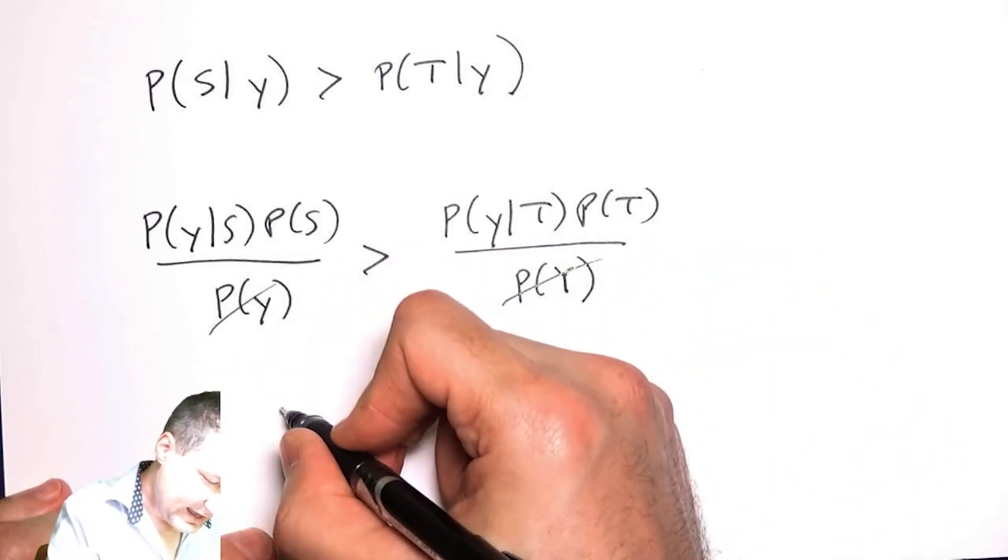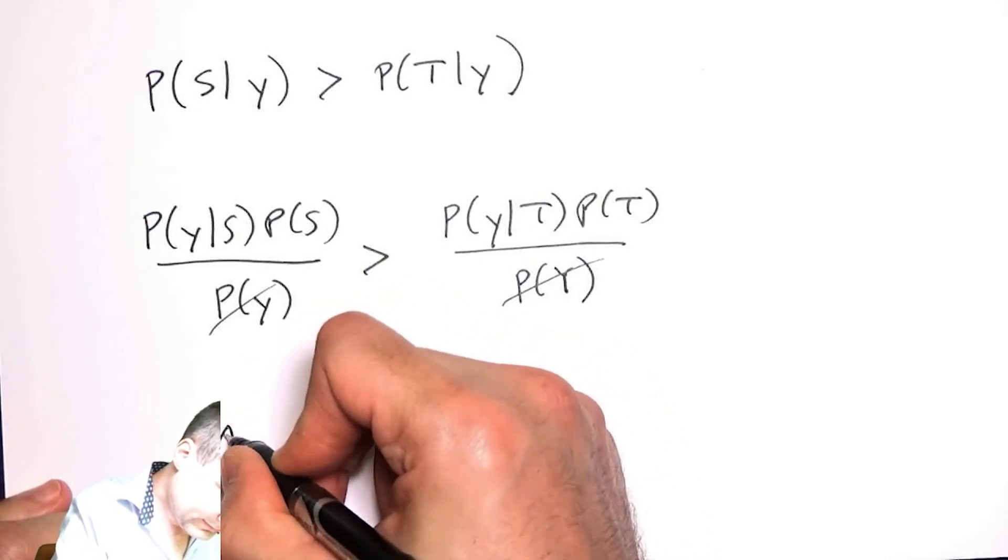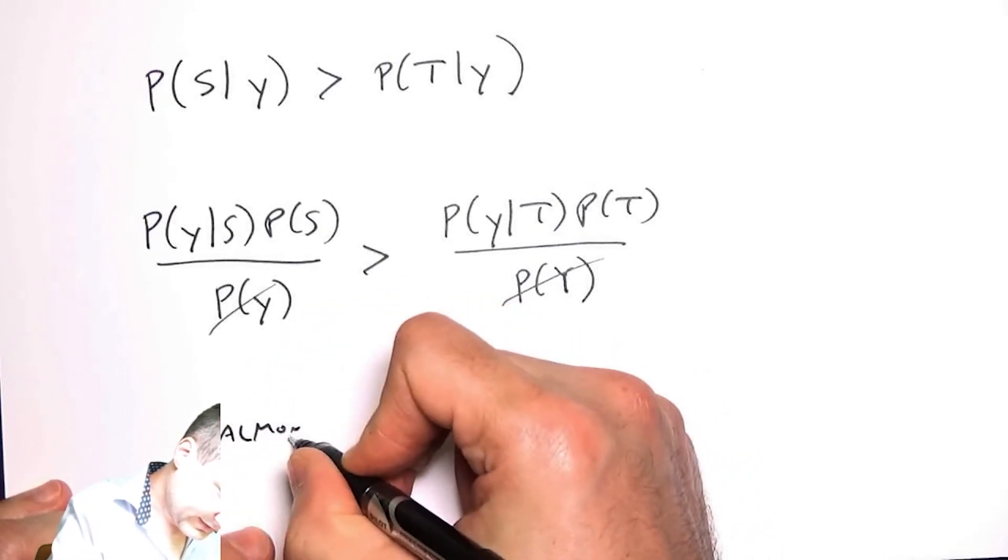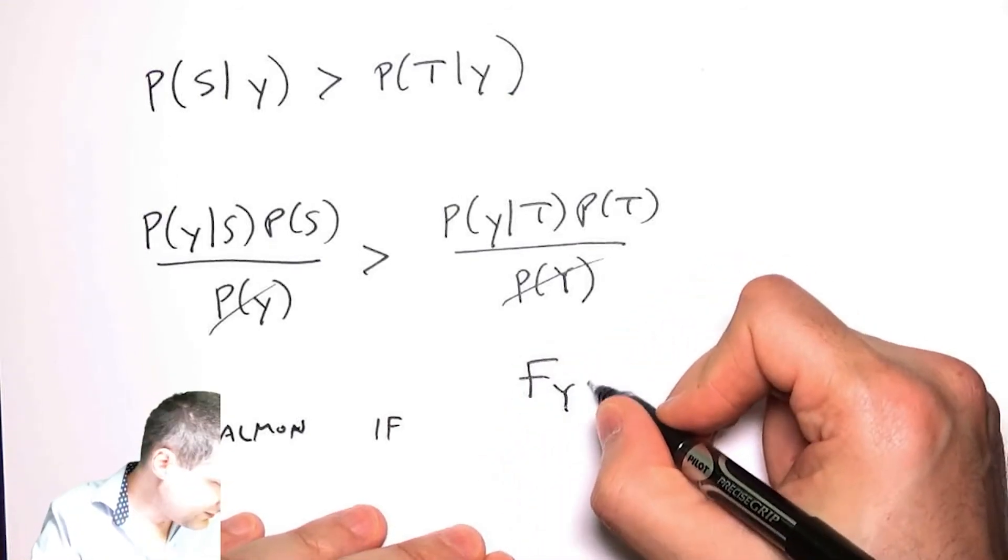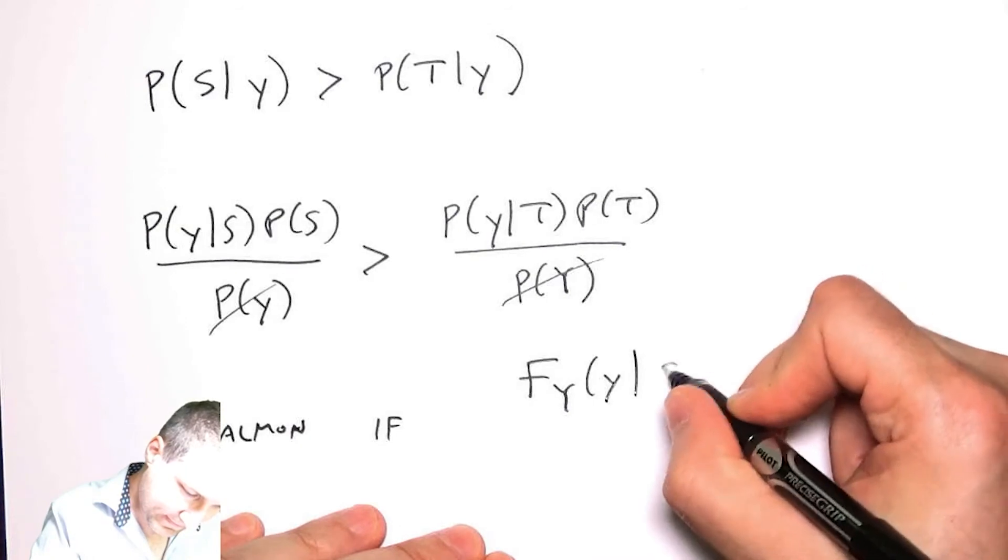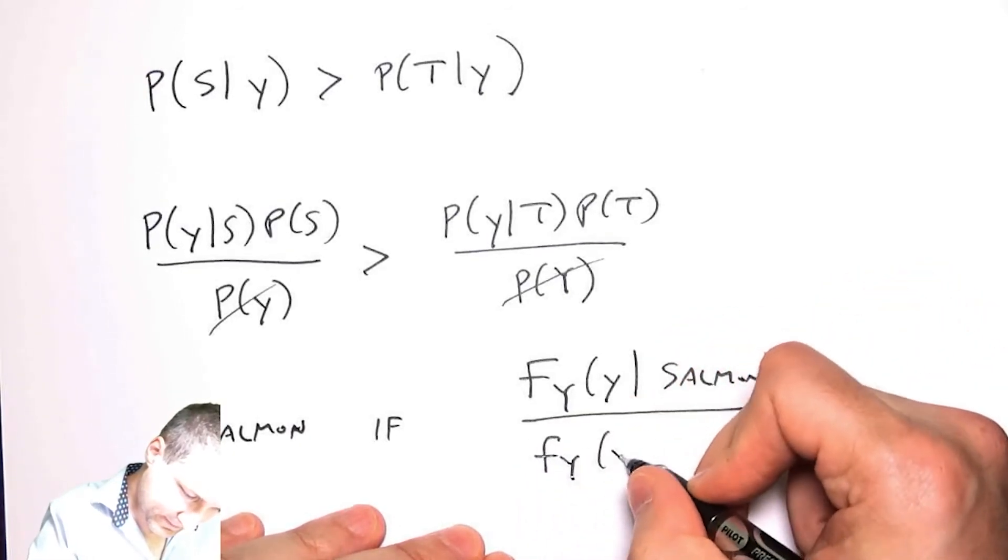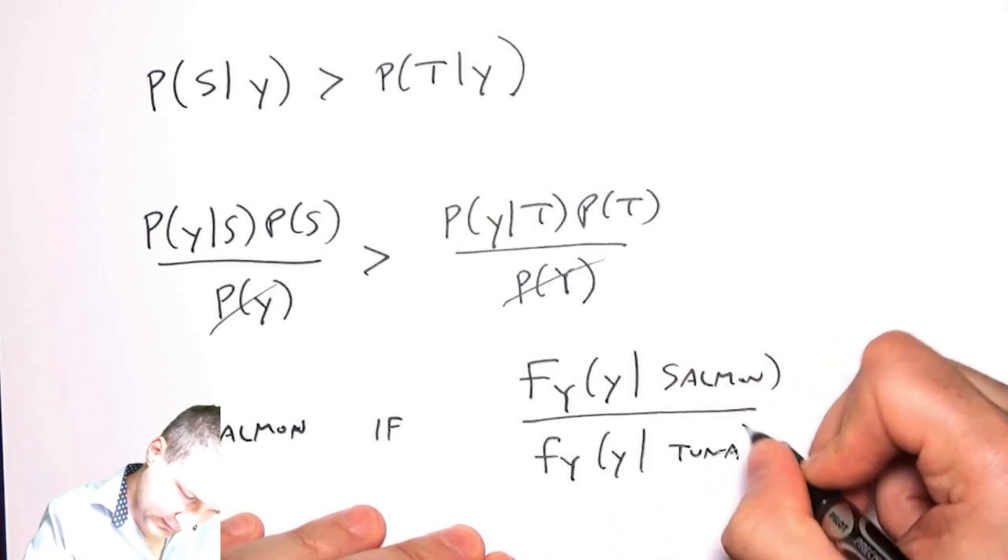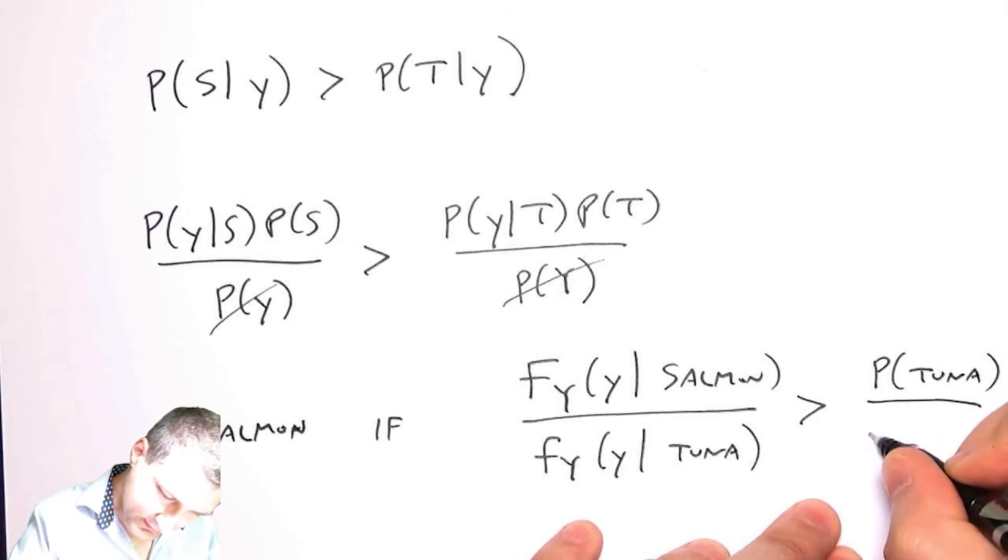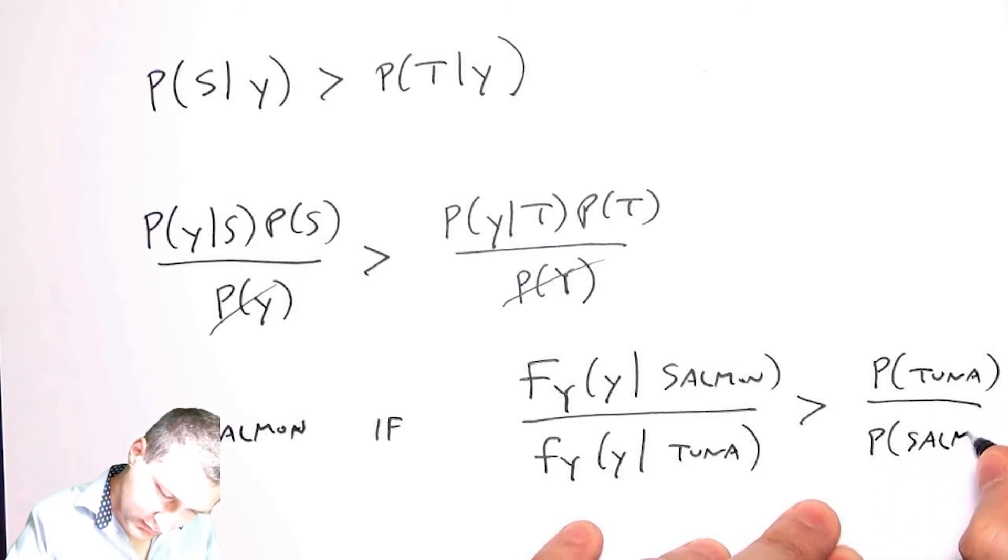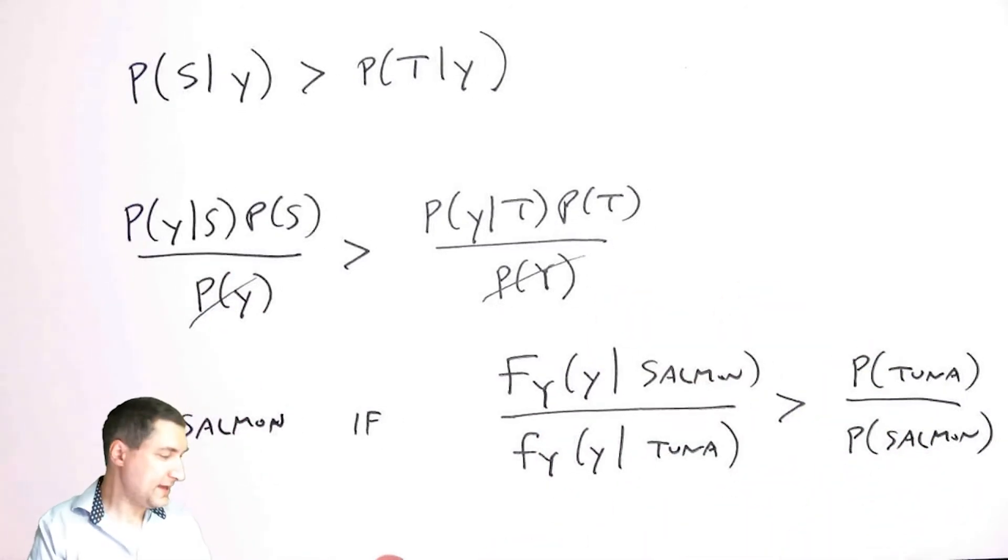Then some things cancel out. The probability of y cancels out, and the decision rule is basically saying choose salmon if F_Y(y|salmon) over F_Y(y|tuna) is greater than P(tuna) over P(salmon). All I'm doing is rearranging these things to get this.